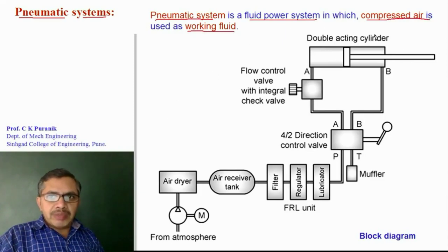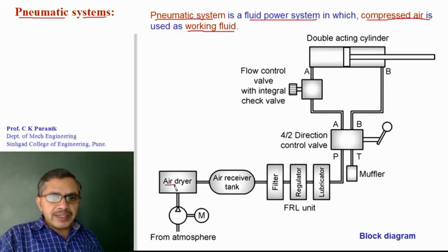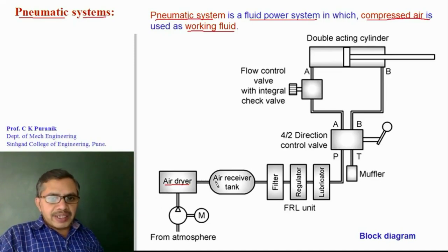This is the block diagram of a pneumatic system. It has a compressor. The compressor draws atmospheric air, compresses it, increases the pressure, and delivers it to the air receiver tank. The compressed air then flows through an air dryer, which removes moisture content from the compressed air. It condenses the moisture into liquid water, which is then drained out. The dry compressed air is stored in the air receiver tank.